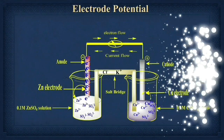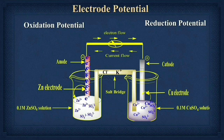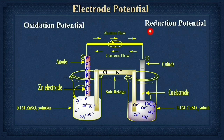Now let us talk about the oxidation potential and the reduction potential. When the oxidation reaction is observed and a potential difference forms, that potential is called the oxidation potential. In this cell, there is a zinc rod dipped in a ZnSO₄ solution where an oxidation reaction is observed, and the potential developed is called the oxidation potential. Similarly, when a copper rod is dipped in a copper sulfate solution, a reduction reaction is observed and the potential developed is called the reduction potential.